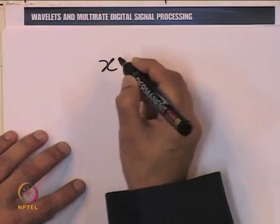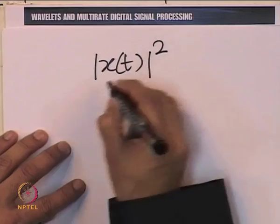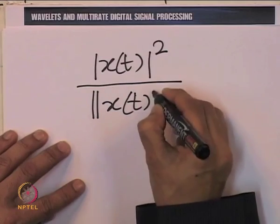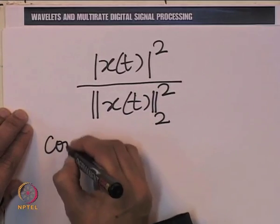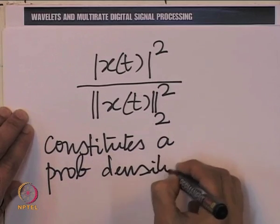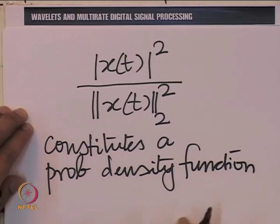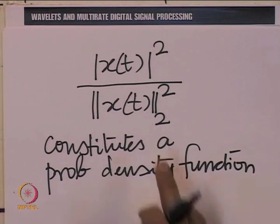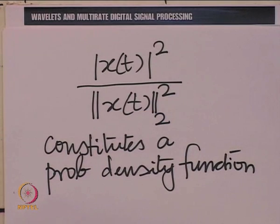Let us recall the meaning of the time center. We said that mod x(t) squared divided by the L2 norm squared of x(t) constitutes a probability density function. That is obvious because if you integrate this over all t it must be 1, and it is non-negative by construction. One can think of the mean and the variance of this distribution.